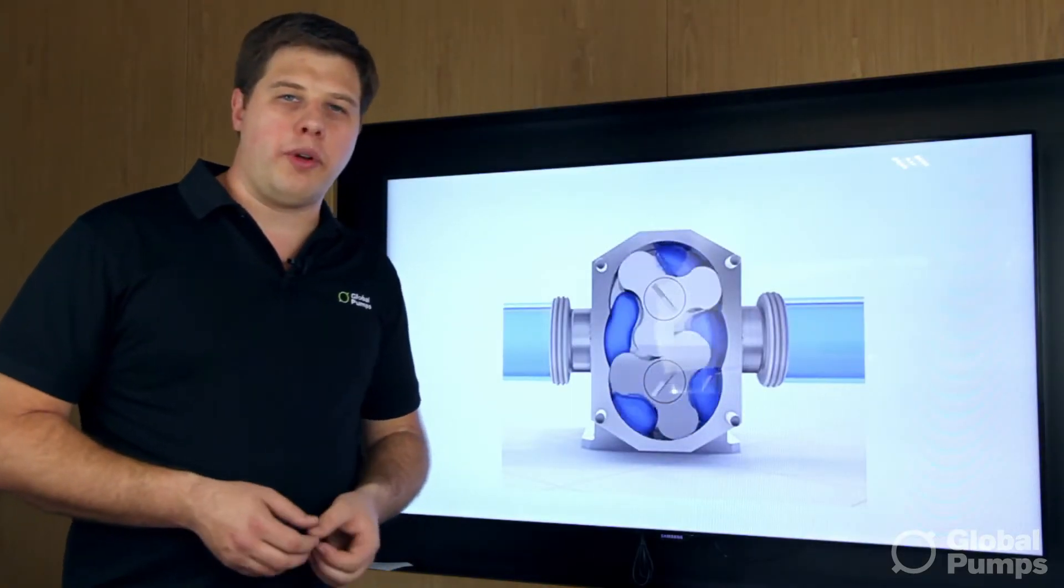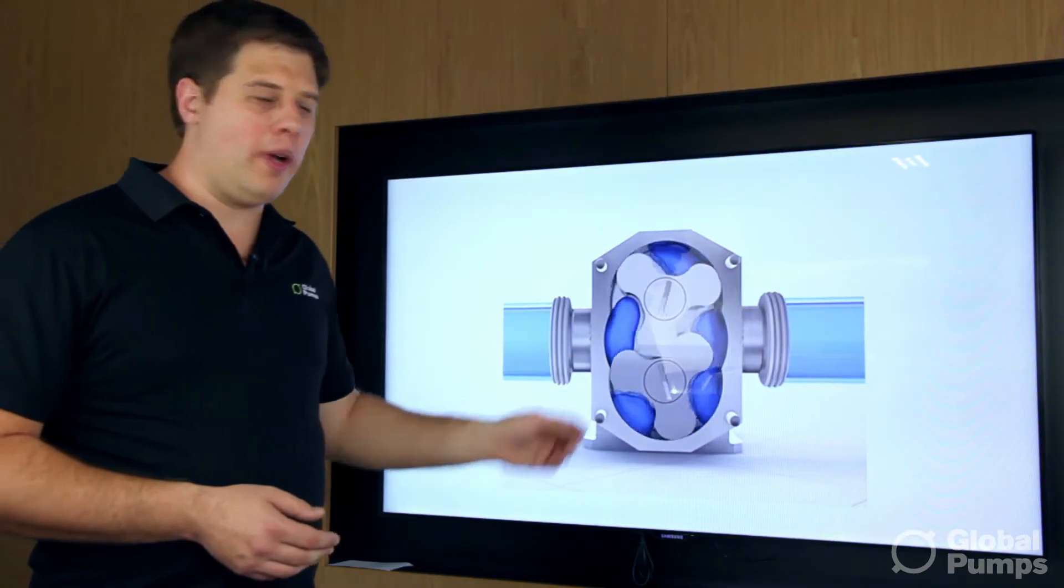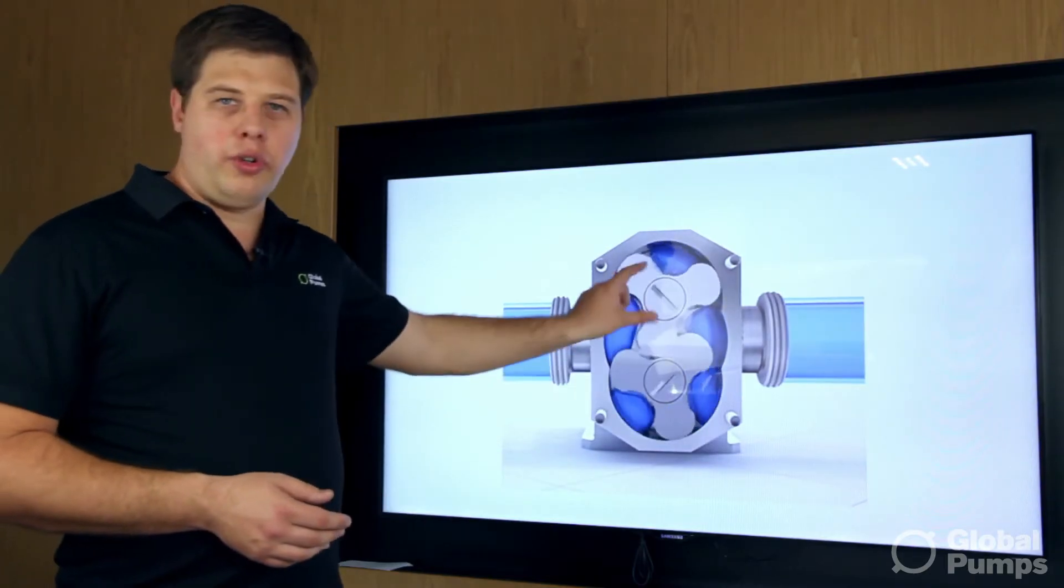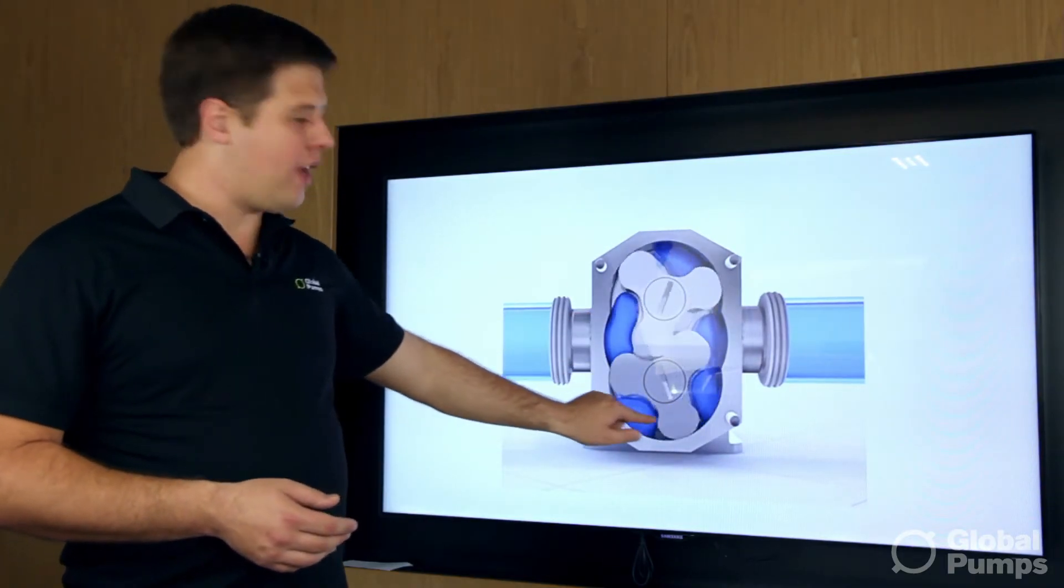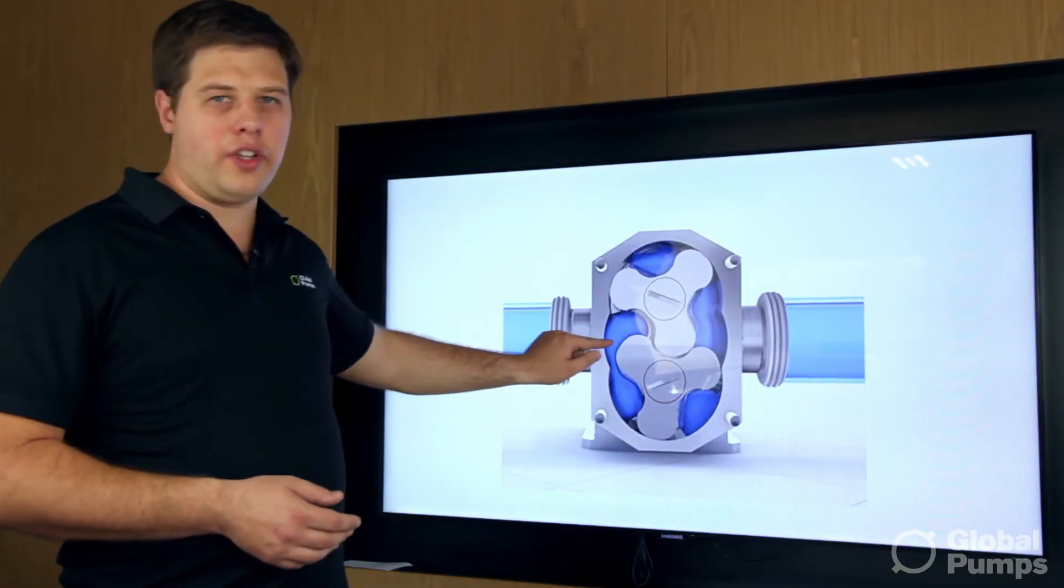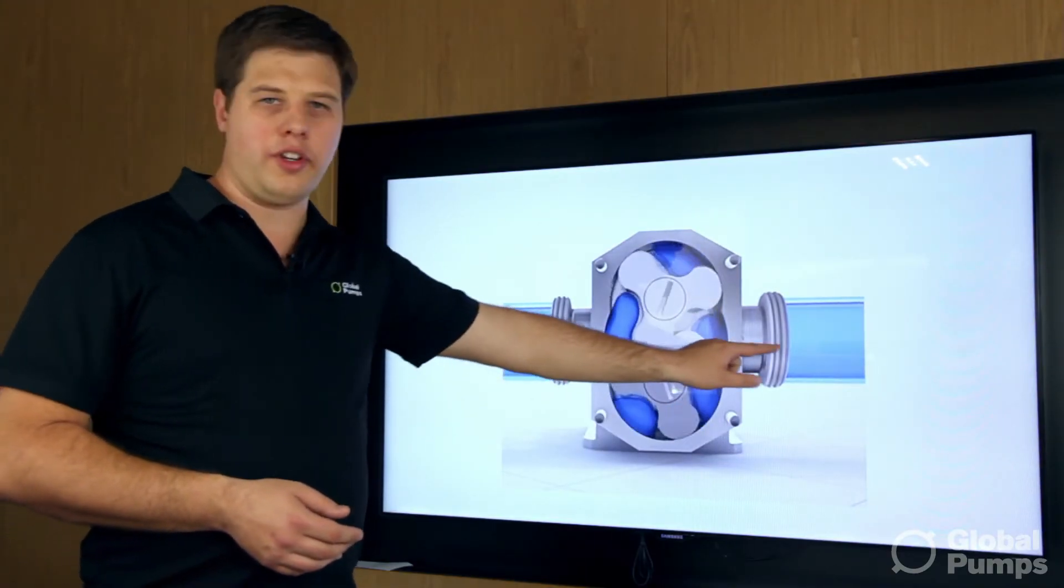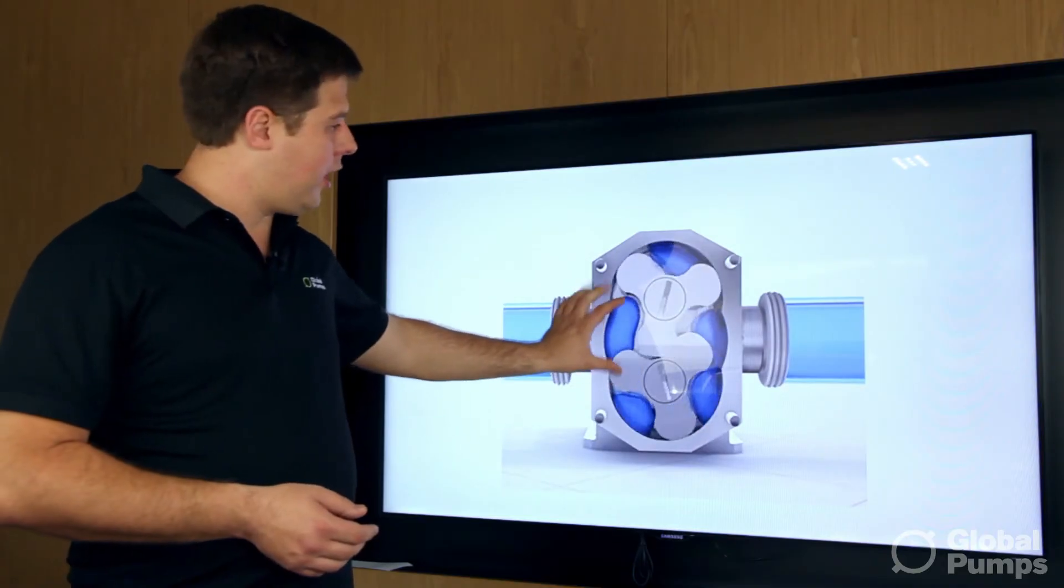Another rotary style positive displacement pump is this lobe pump. You've got two lobes which create a cavity and it transfers the liquid through to the discharge. It will separate the liquid here, go around here and out the discharge.